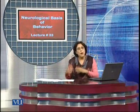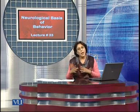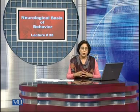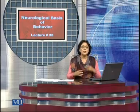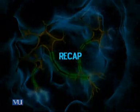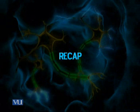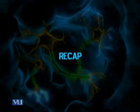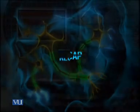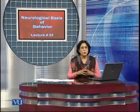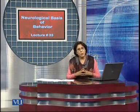Norepinephrine extends down into the brainstem area and the spinal cord. It has two major pathways — the dorsal and the ventral pathway — and is involved in the modulation and control of most behaviors. It also has two different kinds of receptors: the alpha receptors and the beta receptors.